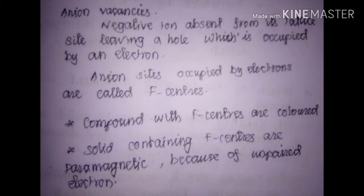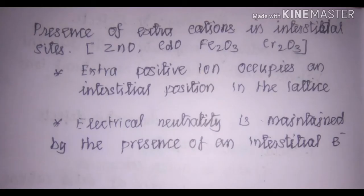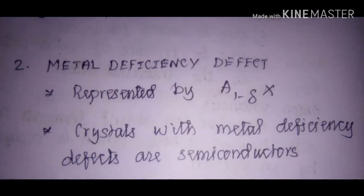The two main properties of F-centers are: they are colored because of the electron present in the vacant site, and they are paramagnetic because of the unpaired electron in the vacant site. Compounds such as zinc oxide, cadmium oxide, iron oxide, and chromium oxides exhibit this kind of metal excess defect.